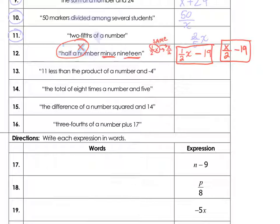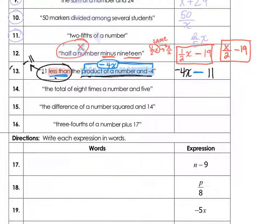For 13, you're looking at 11 less than the product of a number and negative 4. We have a turnaround phrase, which is subtraction. 11 is one of the things subtracting, and the product of a number and negative 4 is the other thing. So the product of a number and negative 4 is negative 4x. That's just this blue phrase right here. And negative 4x is subtracting with 11. But since less than is a turnaround phrase, this one's going to go first, and this one's going to go second. So we have negative 4x minus 11.